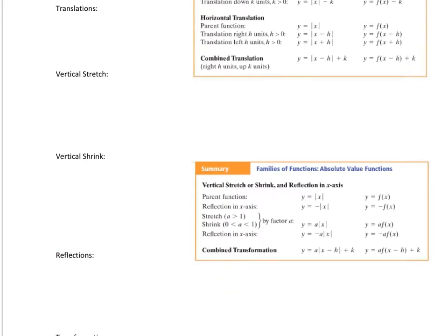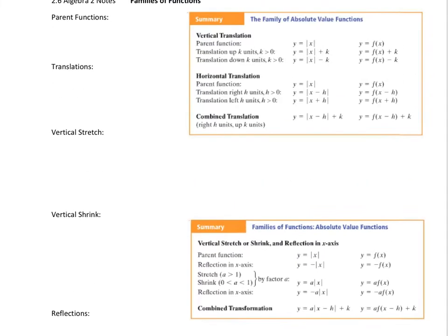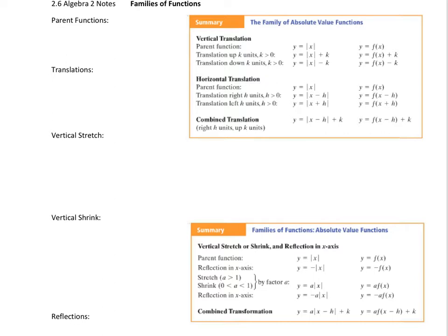If you understand what reflections are, shrinks, stretches, and translations, then you can graph parabolas, absolute values, polynomials, and quadratics. A parent function is just your most basic function. The parent function we're going to work with today is y equals the absolute value of x. It has a y-intercept of 0, a slope of 1, and it opens up. There are also other parent functions — quadratic, linear, cubic, and square root.